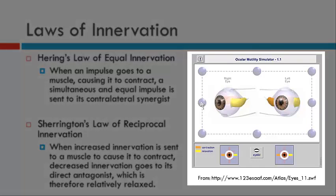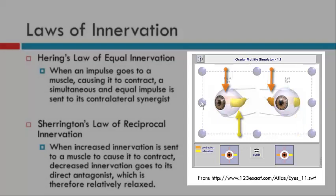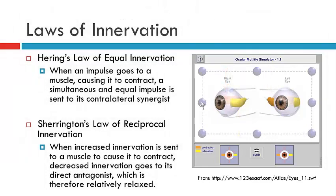Looking at the ocular motility simulator: for the right eye, the lateral rectus is contracting whilst the ipsilateral antagonist, the medial rectus of the right eye, is relaxing. For the left eye, whilst the medial rectus is contracting, the lateral rectus is relaxing. Sherrington's Law also implies that the state of tension of the contracting muscle — the agonist — is exerting a regulatory influence on the state of tension of the antagonist, and vice versa.